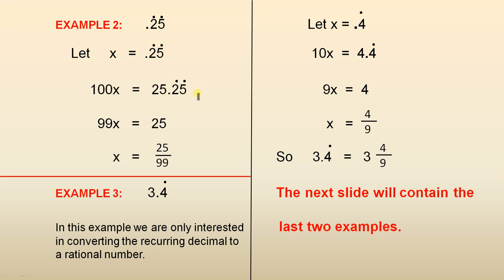Therefore, 100x equals 25.2525, where the 2 and the 5 keep recurring. 100x minus x is 99x. 25.25, where the 2 and the 5 recur, minus 0.25, where the 2 and the 5 recur, gives you 25. So 99x equals 25, therefore x equals 25 over 99. So those two are the same.